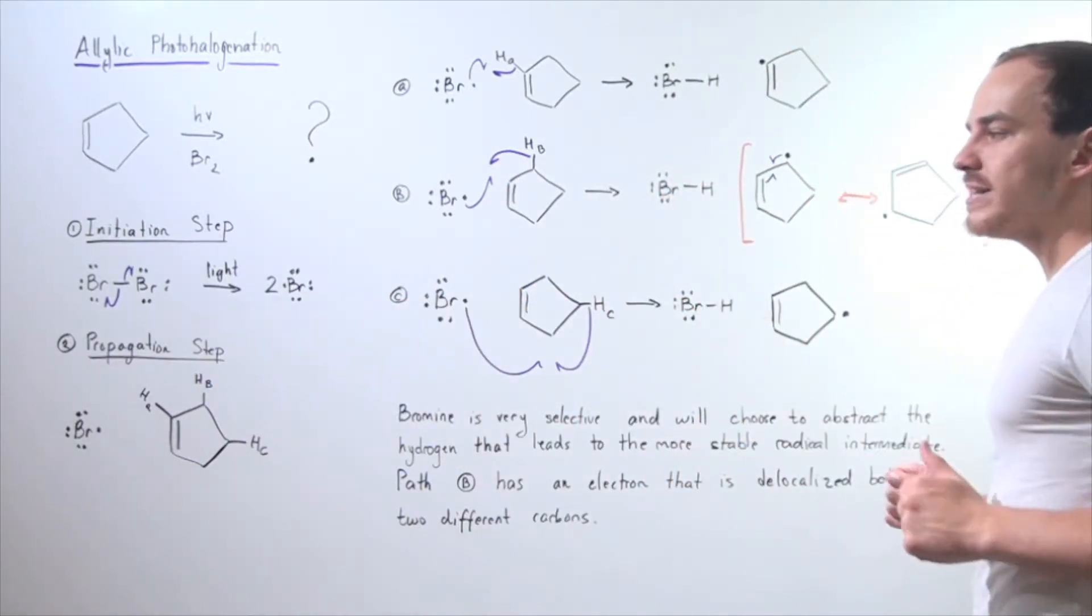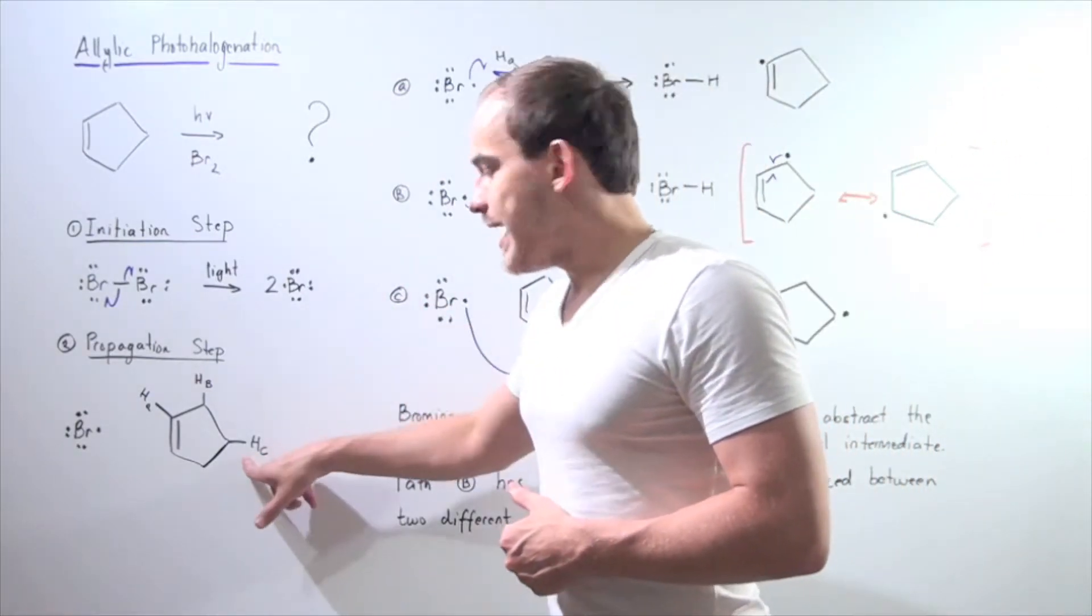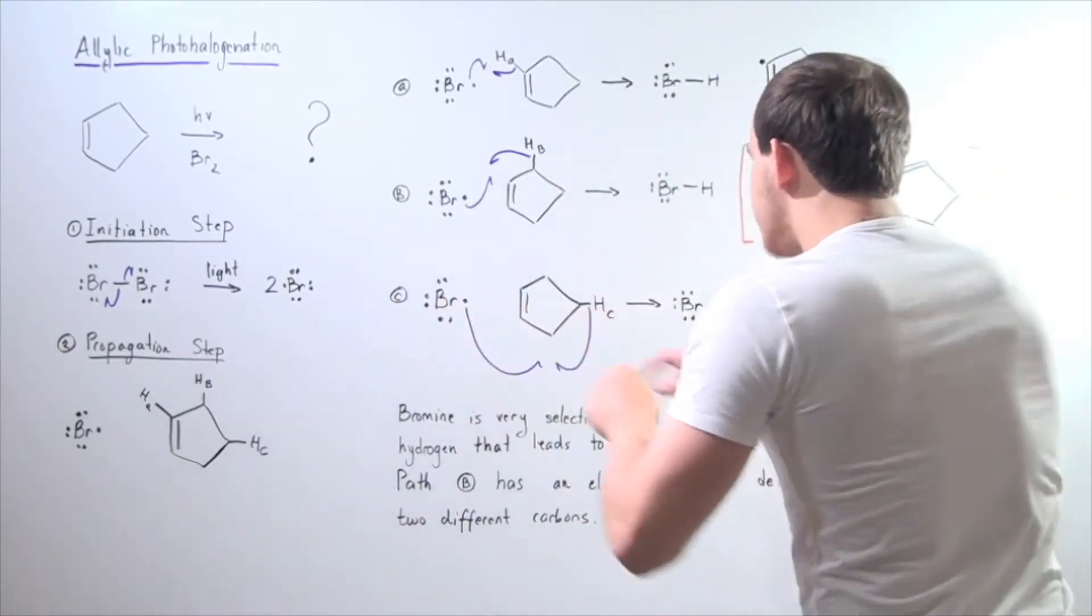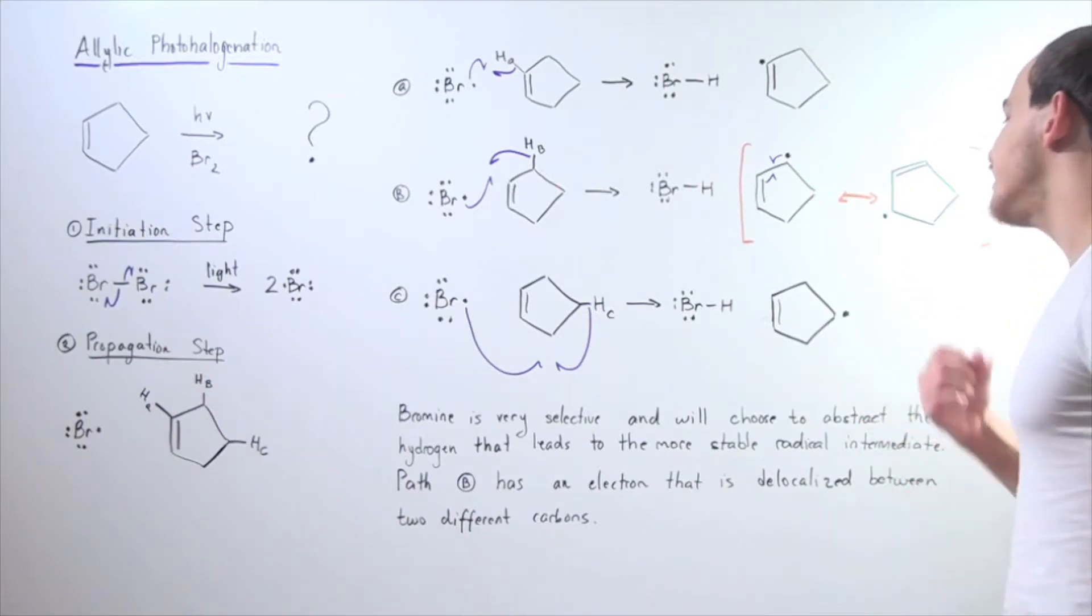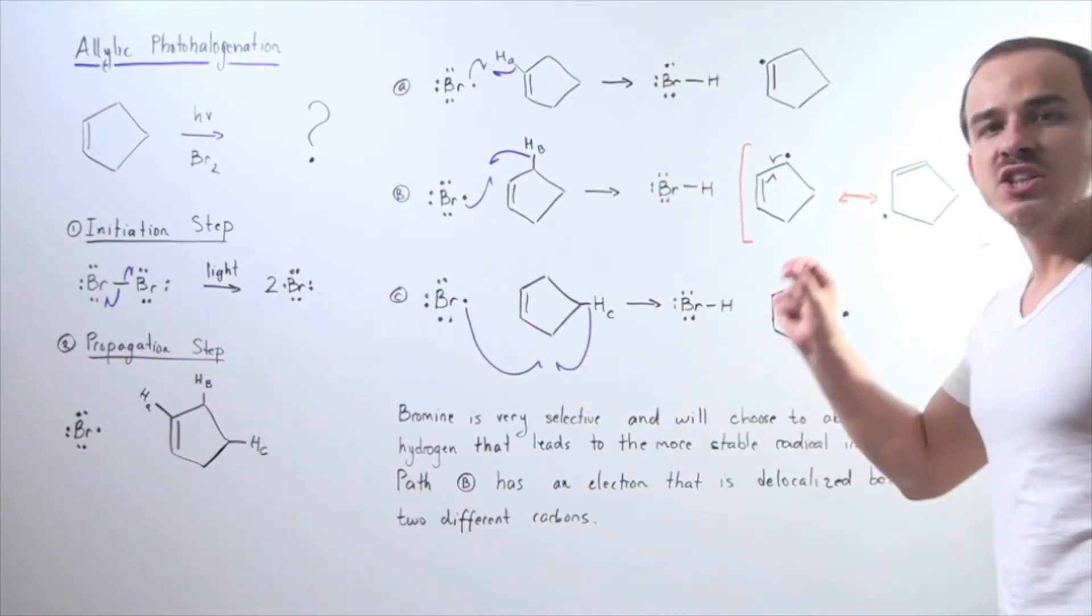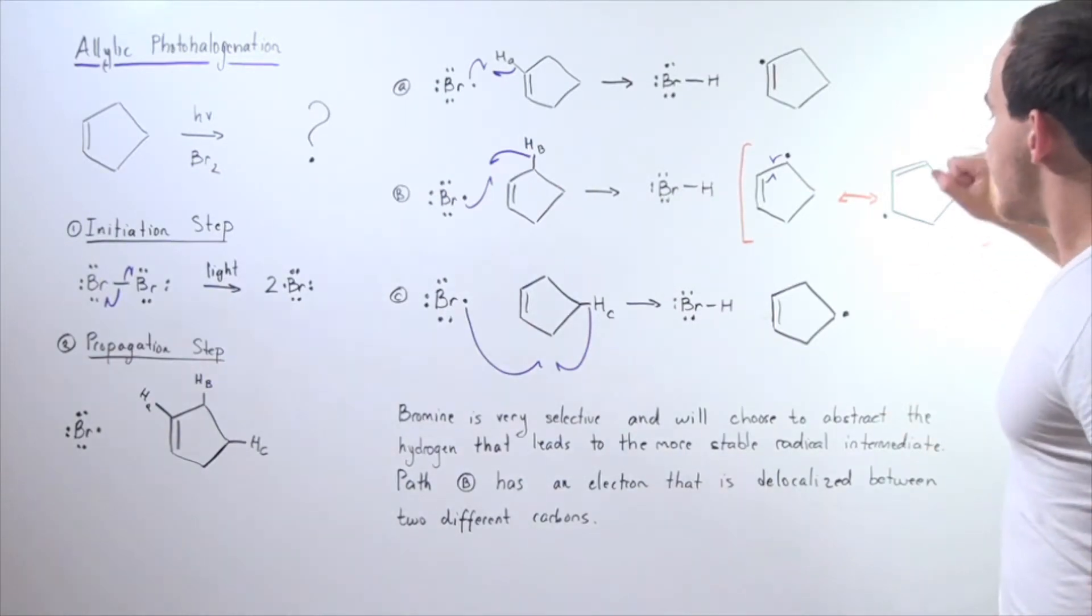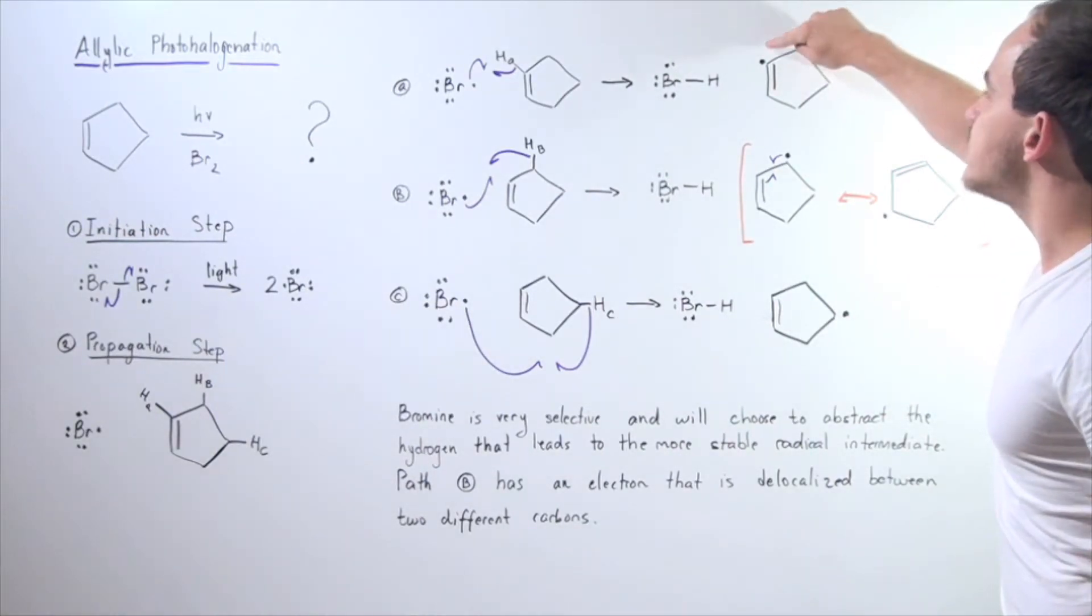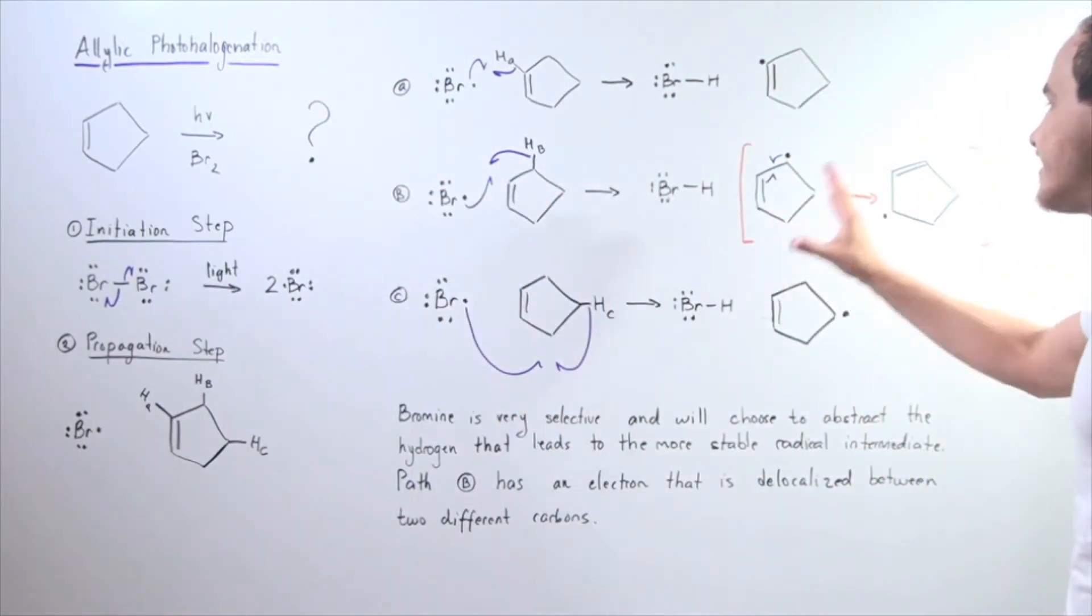Now let's look at pathway C. In pathway C, if our bromide chain-carrying radical decides to abstract the final HC, H subscript C, we get the following two products. Once again, a bond is formed between the H and bromide, and the last type of chain-carrying radical is formed. Now notice that pathway A and pathway C, there's no delocalizing of our electron. There's no resonance-stabilizing effect. In other words, this pi bond is too far to interact with this electron. Likewise, this electron is simply too close. This is the only pathway that leads to our resonance-stabilized structure.